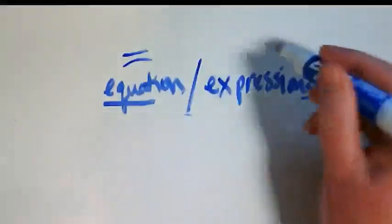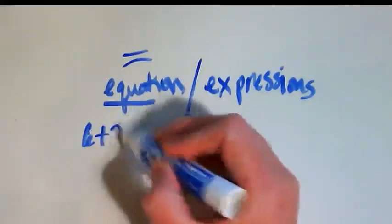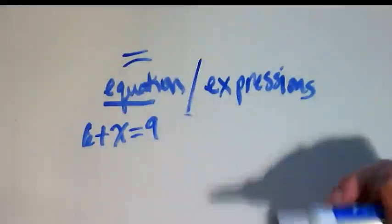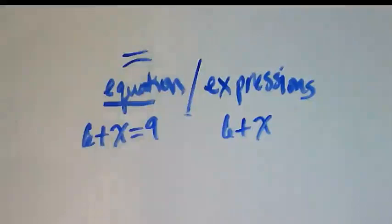So this has equal signs, this does not have equal signs. So 6 plus x equals 9 is an equation, but 6 plus x is an expression.